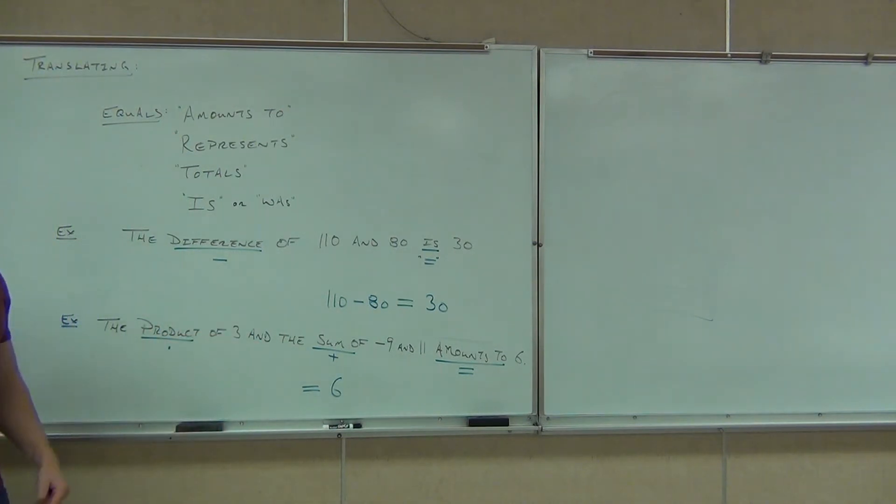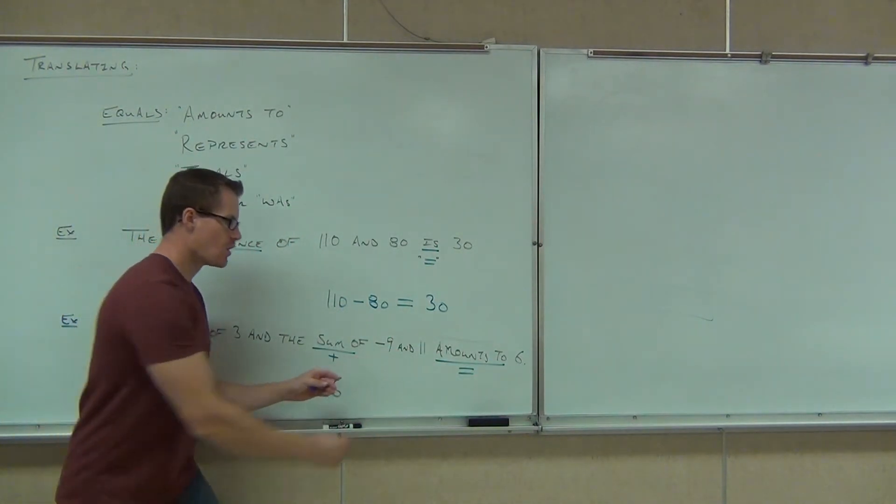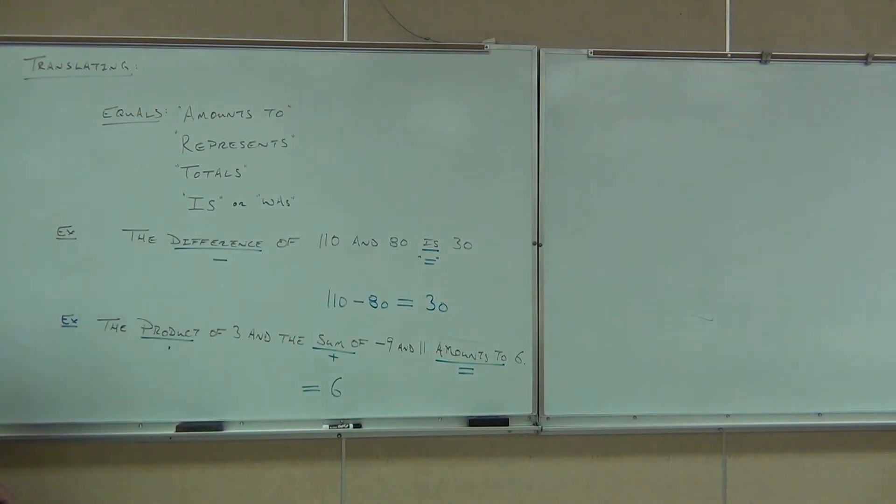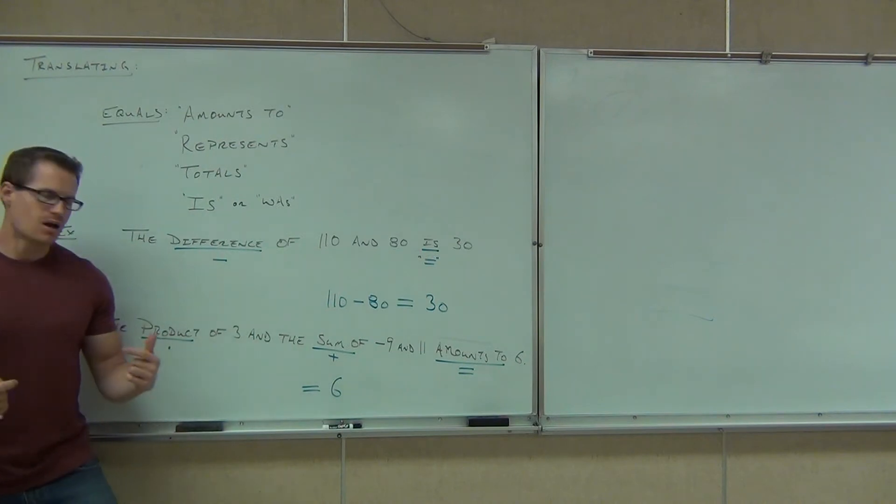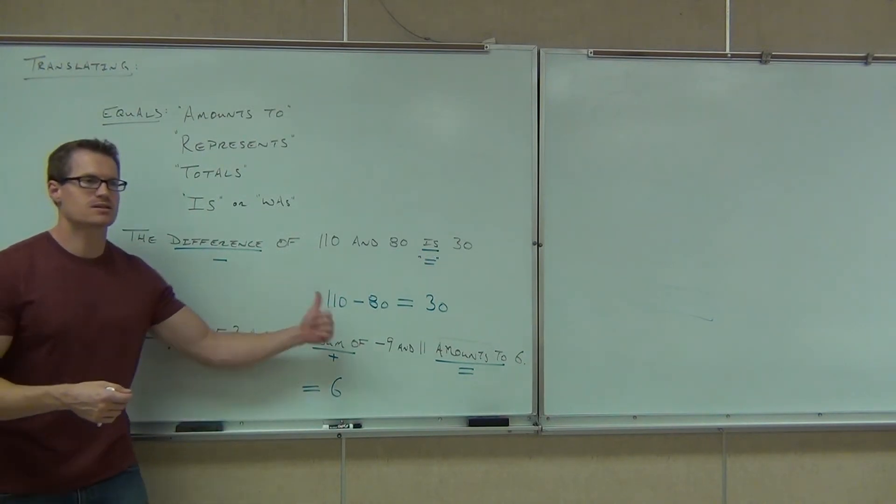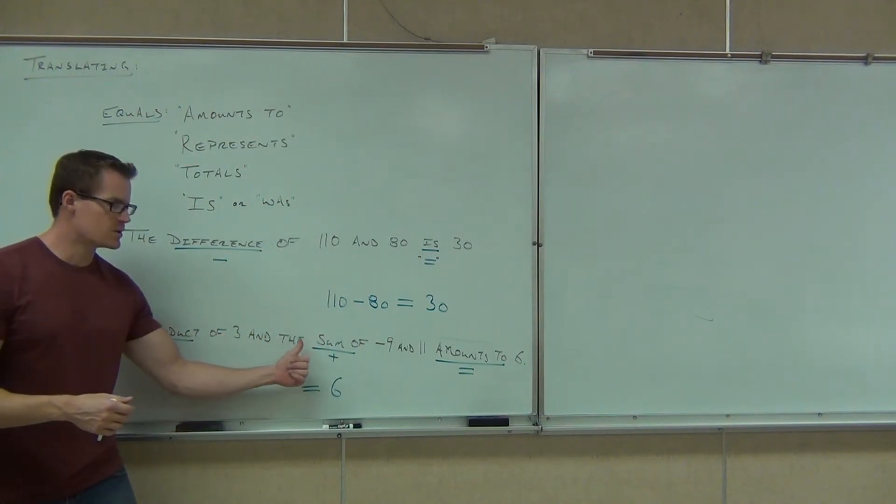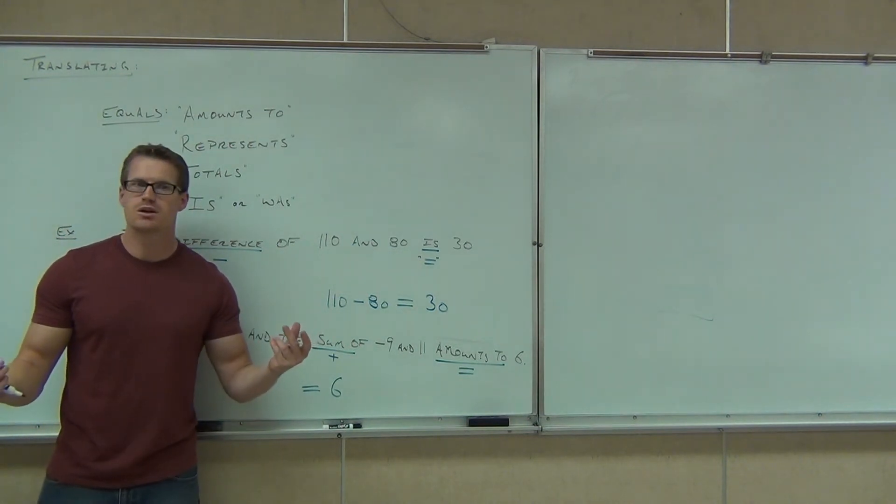But now wait a second. We dealt with this before. If we ignore these amounts to 6, we already have the equal 6. We're really just focusing on this portion of it: the product of 3 and the sum of negative 9 and 11. Whenever you saw that, you remember how I said the product of 3 and, it should give you a number there. Product of 3 and 6. Product of 3 and negative 2. Product of 3 and something. If it doesn't give you a number, what that implies is that you're going to have to use what? You're going to have to use parentheses.